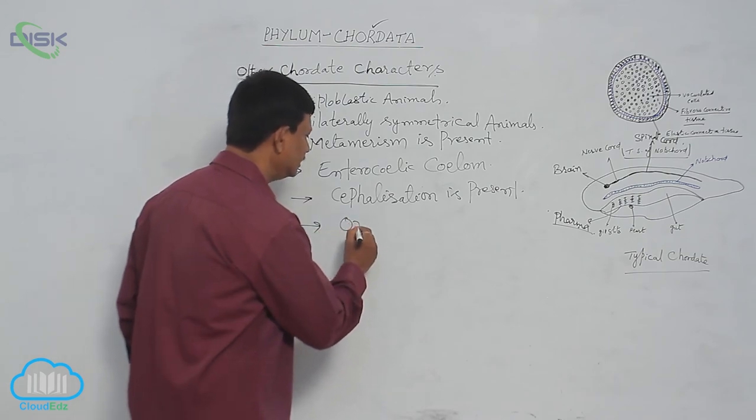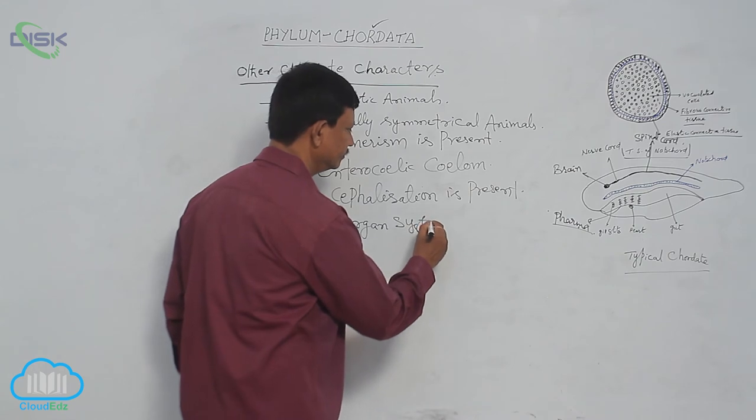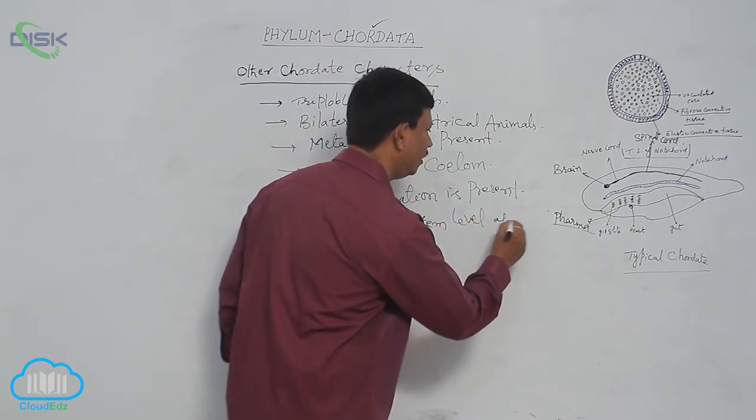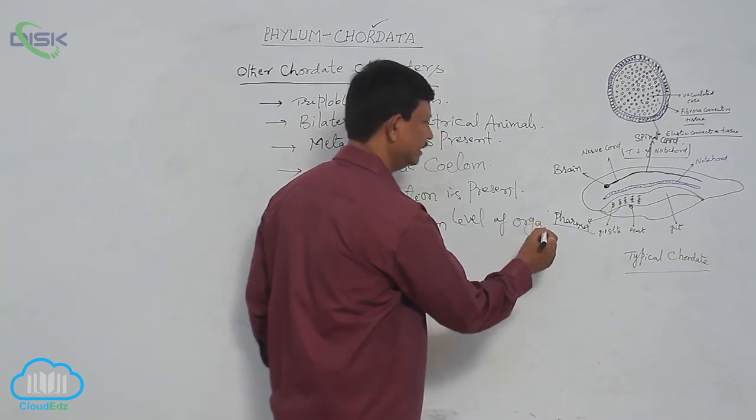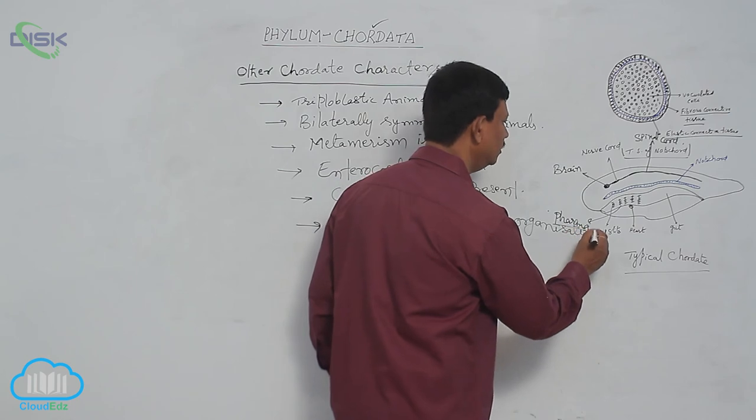Organ system level of organization is also present in chordates because they are highly evolved animals.